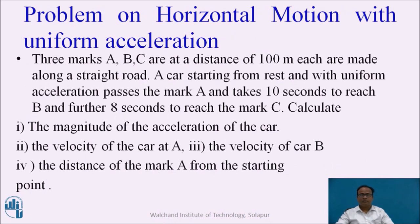Now let us consider an example — a problem on horizontal motion with uniform acceleration. Three marks A, B, and C are at a distance of 100 meters each, made along a straight road. A car starting from rest with uniform acceleration passes mark A and takes 10 seconds to reach B, and a further 8 seconds to reach mark C. Calculate: the magnitude of the acceleration, the velocity of the car at A, the velocity at B, and the distance of mark A from the starting point.